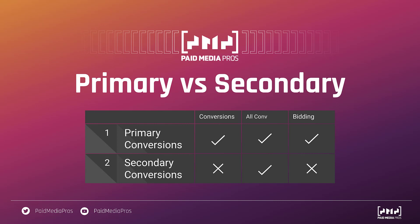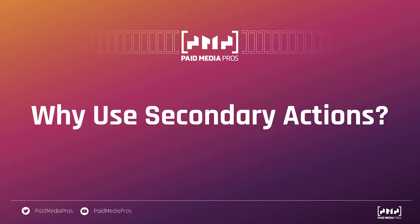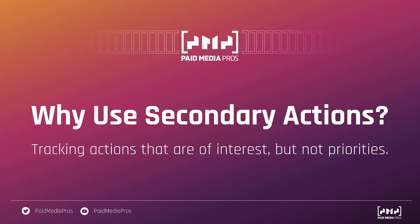Because secondary actions are not used for anything other than reporting in the all conversions column, that might lead you to ask: why would you use secondary actions in the first place? The answer is pretty simple — they allow you to track actions that are of interest but are not priorities. Things you're not trying to optimize for, but that are influential in your marketing decisions or certain KPIs you're interested in but that might not be the primary focus of your account.